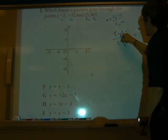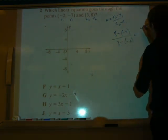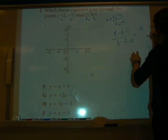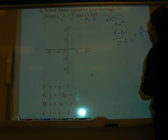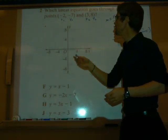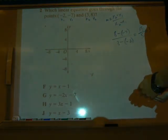Now let's plug in. y2 is 8 minus negative 7 over 3 minus negative 2. Remember, minus a negative becomes a positive. This becomes 8 plus 7, which is 15. This becomes 3 plus 2, which is 5. 15 divided by 5 is 3. What does that mean? That means the slope that goes through these two points is going to be 3.